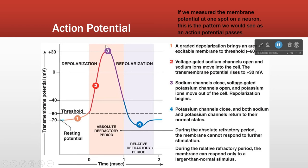At point number three, sodium channels are closing — inactivating — and potassium channels' slow activation gate is finally open. From three to four, what we see is potassium rushing out, so the membrane potential goes from sodium's Nernst potential all the way down to potassium's Nernst potential — from plus 30 all the way down to about minus 90.